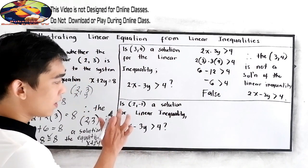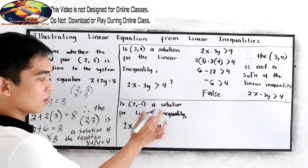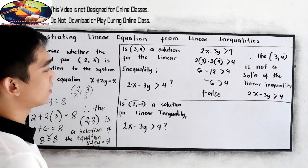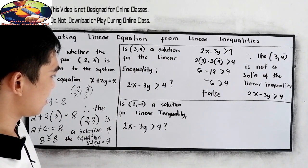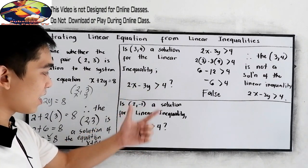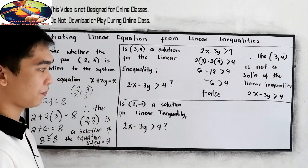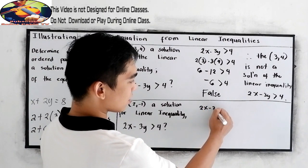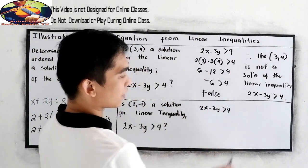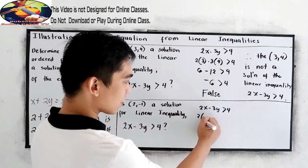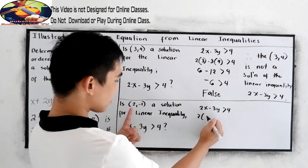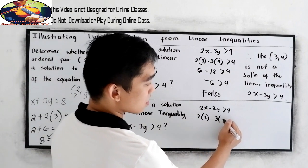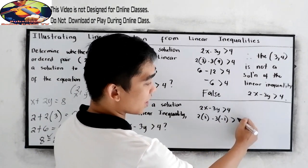Let's try our second example. Is (2, negative 1) a solution for the linear inequality 2x minus 3y greater than 4? We use the same inequality but test this new ordered pair. So we have 2x minus 3y greater than 4, substituting 2 times x is 2, minus 3 times y is negative 1. Is it greater than 4?